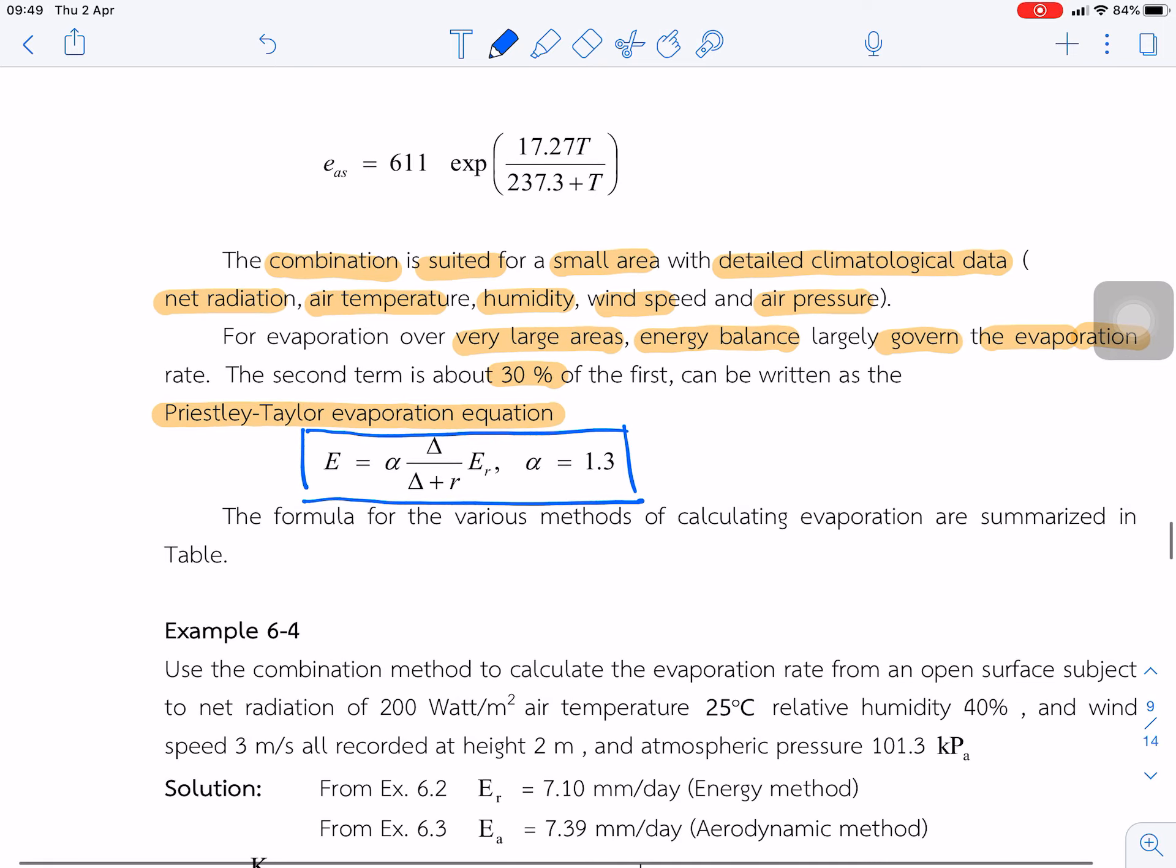So if we know the equation from the energy method, we just multiply by the factor lambda in front of this term. So we got evaporation.